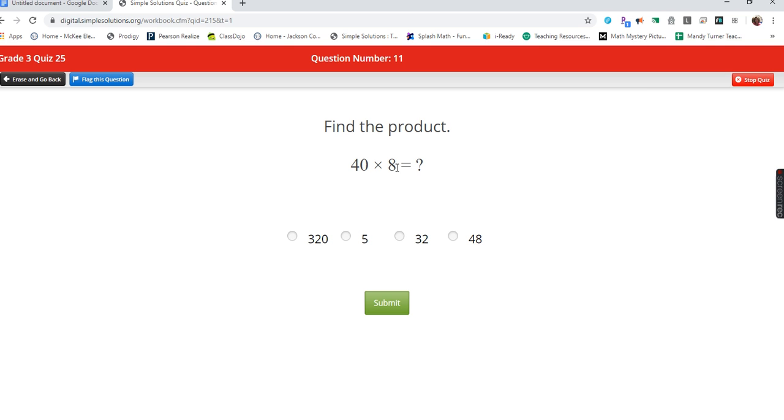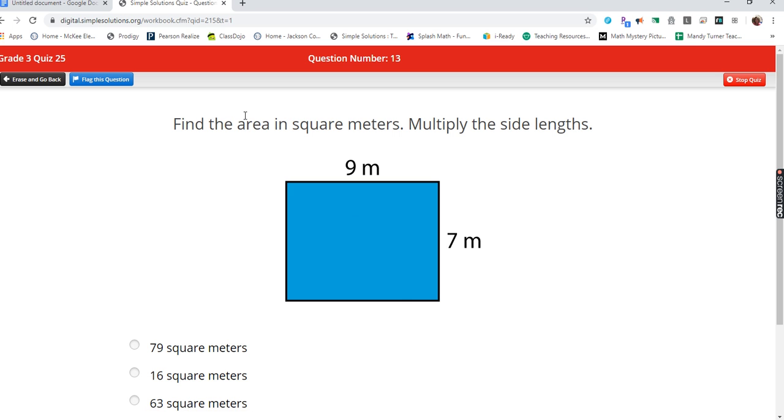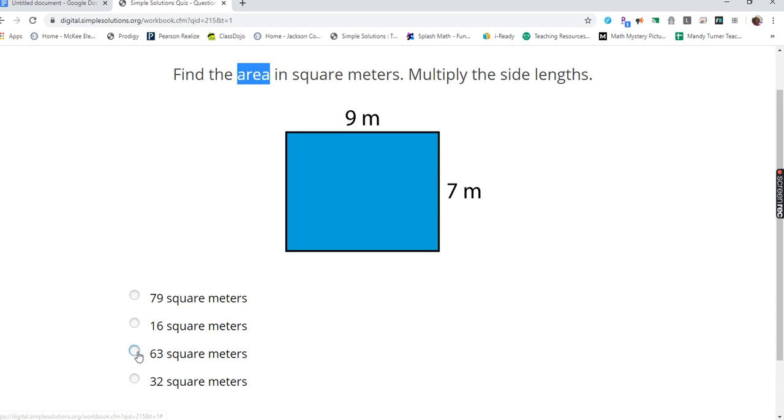Forty times eight. Four times eight is 32, and I add my zero. Just checking to see if you were listening to me. Six times nine. Well, five times nine is 45, so nine more is 54. Find the area. Area is the inside, and I multiply nine times seven is 63.